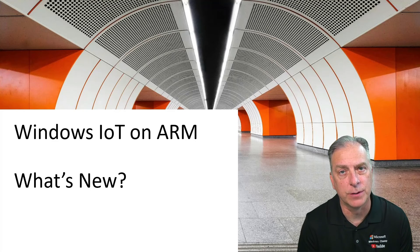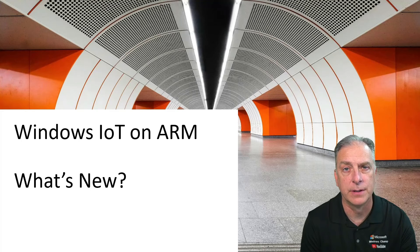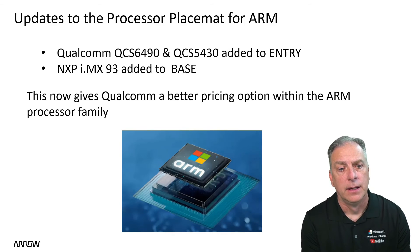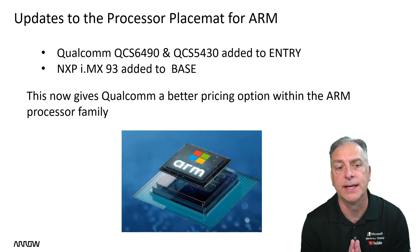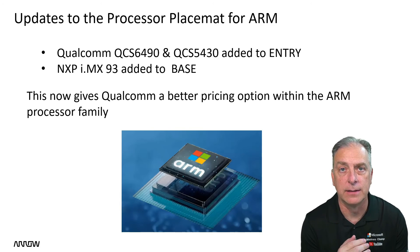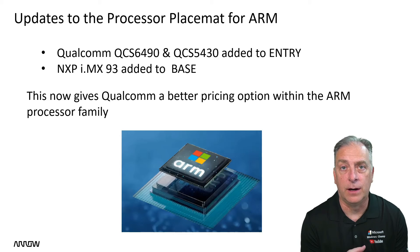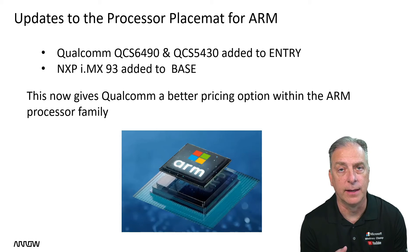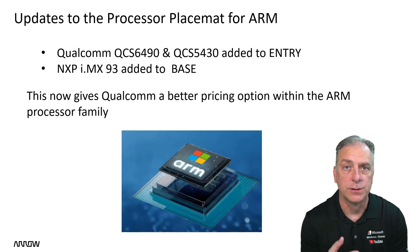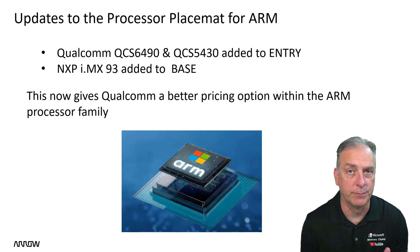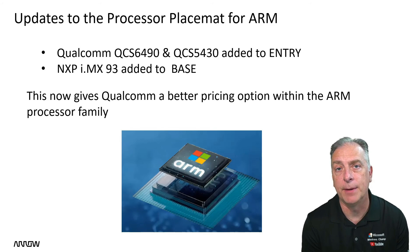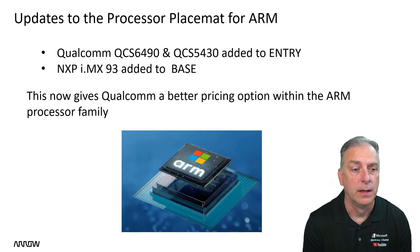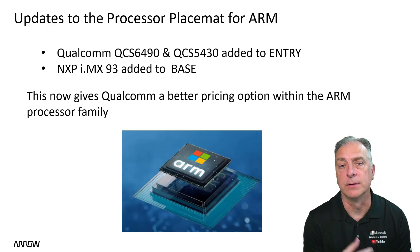Here's the latest news on Windows IoT on ARM products. There were updates to the processor placemat for ARM. Qualcomm added two models — the QCS6490 and the QCS5430 — to the entry price point. Previously, all Qualcomm Snapdragon processors were at the value price point, which is fairly expensive for an ARM device. Moving them down to entry level will save money on Microsoft licensing. Additionally, the NXP IMX93 was added to the base tier, which is the least expensive option, joining the existing IMX8 family. This will help with better pricing for Windows on ARM.